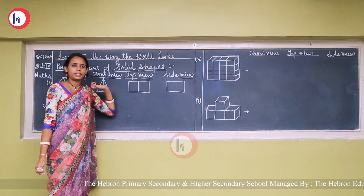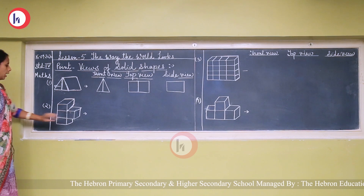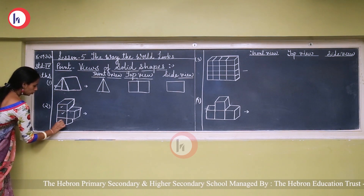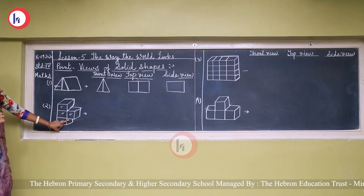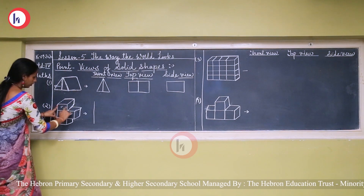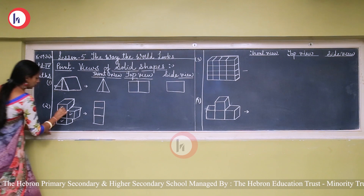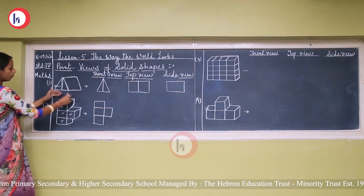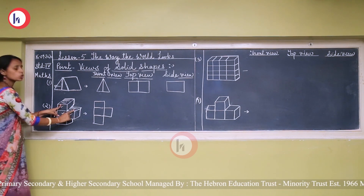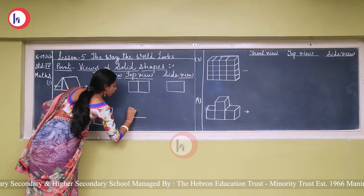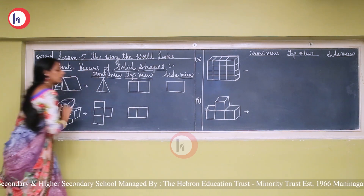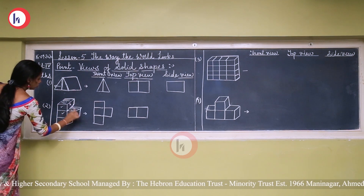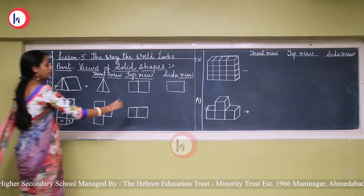Now look at this solid shape. How many cubes are there? One, two, three, four. Whenever we see from the front side only, we can see four squares. So first we draw three squares — one, two, three — and then one more on top. This is the front view. For the top view, we see only two squares from the top, so we draw only two squares. And for the side view, we can see three squares from the side.